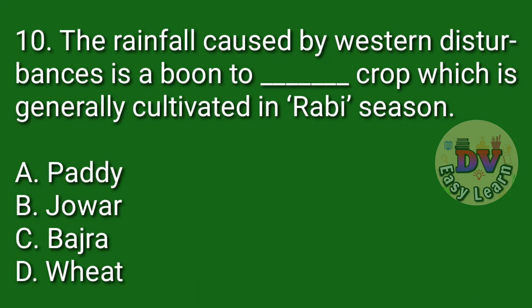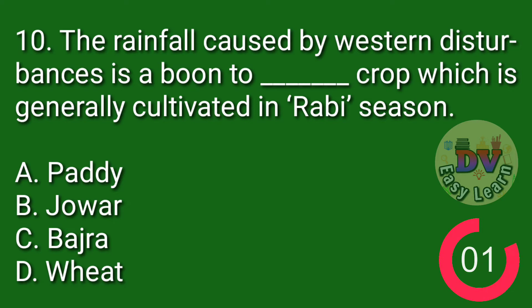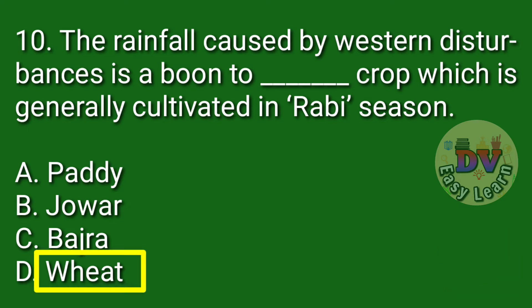Question number 10. The rainfall caused by western disturbances is a boon to the crop which is generally cultivated in Rabi season. Correct answer: Wheat.